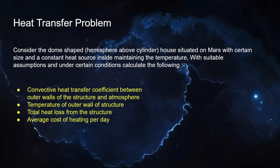The heat transfer problem we made was, consider the dome-shaped house situated on Mars with certain size and a constant heat source inside maintaining the temperature. With suitable assumptions and under certain conditions, calculate the following.